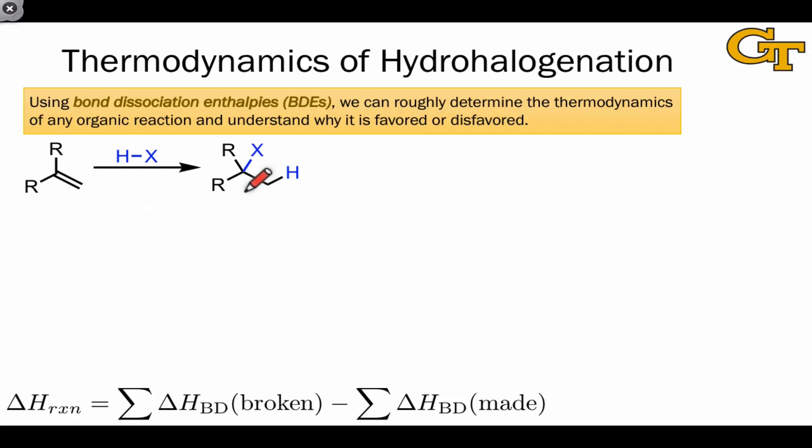One thing to notice at this point is that hydrohalogenation is the reverse reaction of elimination. Elimination of HX from the product would give the starting material. This raises an interesting thermodynamic question, as it seems like either addition or elimination must be favored since these reactions are reverses of one another. We're going to resolve this conundrum in a second, but for the time being, let's try to work out the thermodynamics of hydrohalogenation using bond dissociation enthalpies.